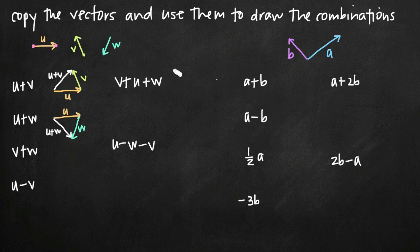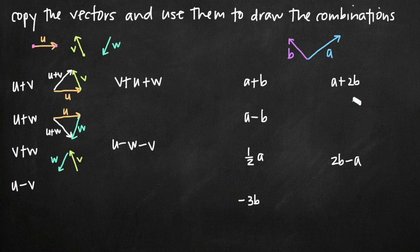For v plus w, we start with v and draw a copy of it, then attach w to the terminal point of v. That tells us that v plus w is the vector connecting the very beginning to the very end.